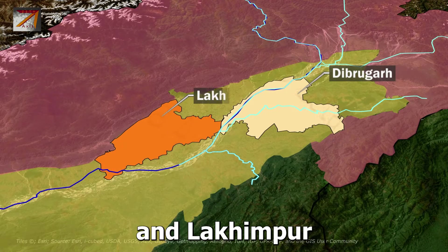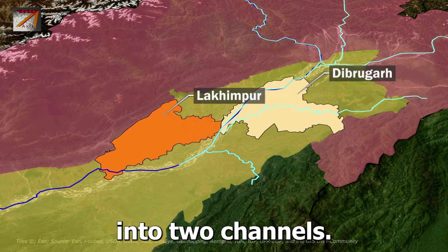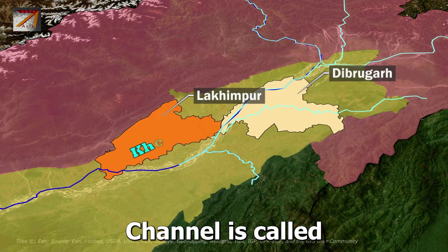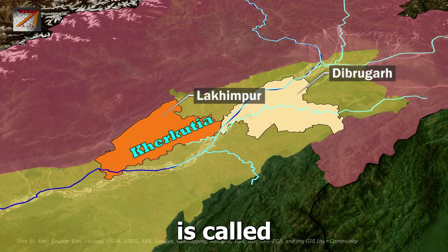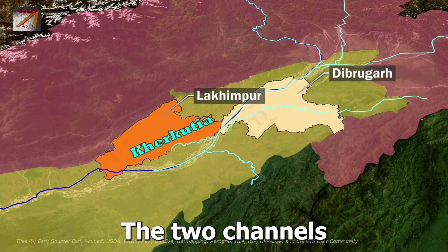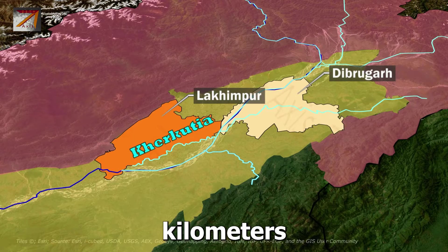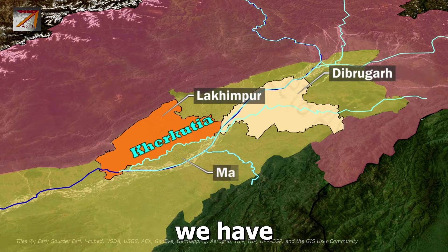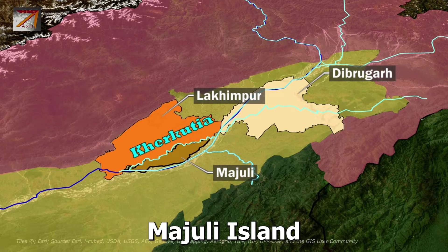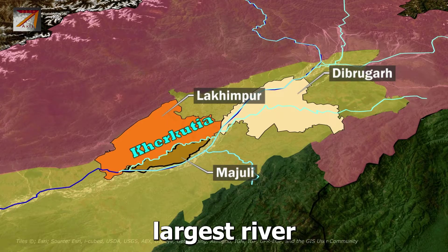Between Dibrugarh and Lakhimpur district, the Brahmaputra River divides into two channels: the northern channel called Kherkutia channel and the southern called Brahmaputra channel. The two channels rejoin after 100 km. Within these two channels lies Majuli Island, which is the world's largest river island.